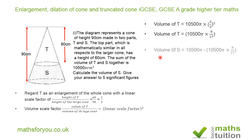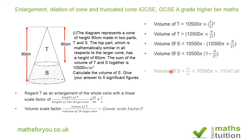To find the volume of S, we take the volume of the whole cone minus the volume of T. Volume of S equals 10,500π minus the volume of T. We can factorize this as 10,500π multiplied by (1 - 8/27), which equals 10,500π times 19/27.